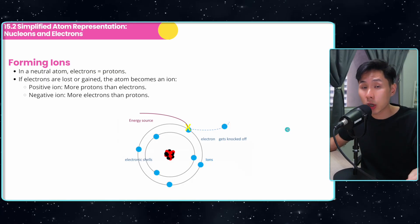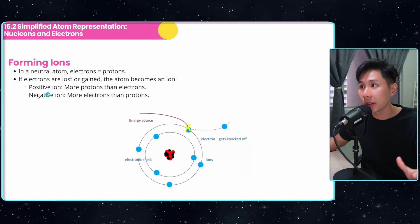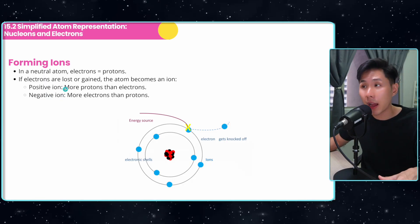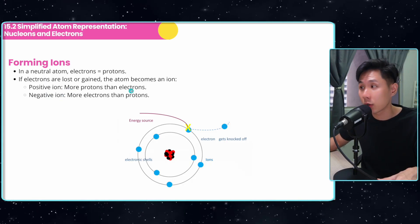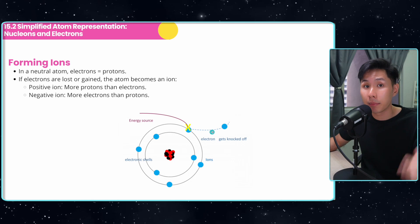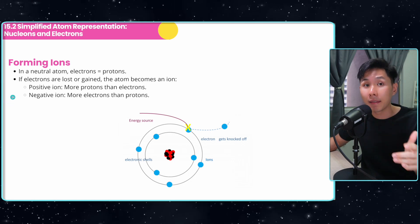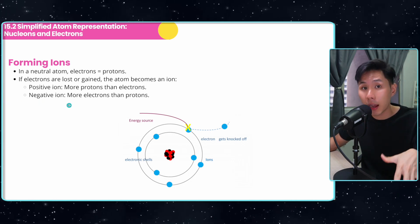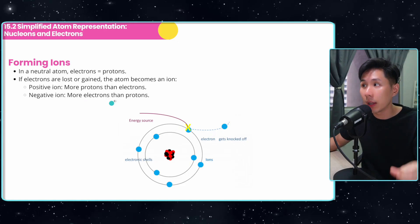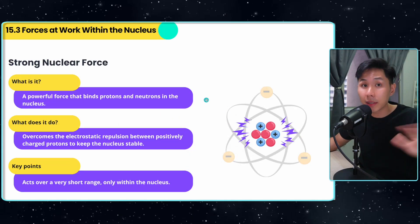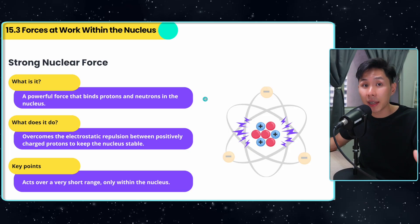So far, the atoms we've looked at are neutrally charged. So how do we create ions? We have a positive ion if there are more protons than electrons, meaning one of the electrons might have been knocked off. The atom will become a negative ion if there are more electrons than protons. That's all the basics you need to know about what's inside an atom.